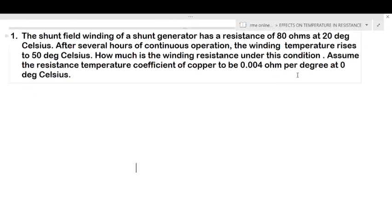The shunt field winding of a shunt generator has a resistance of 80 ohms at 20 degrees Celsius. After several hours of continuous operation, the winding temperature rises to 50 degrees Celsius. How much is the winding resistance under this condition? Assume the resistance temperature coefficient of copper to be 0.004 per degree at 0 degrees Celsius.